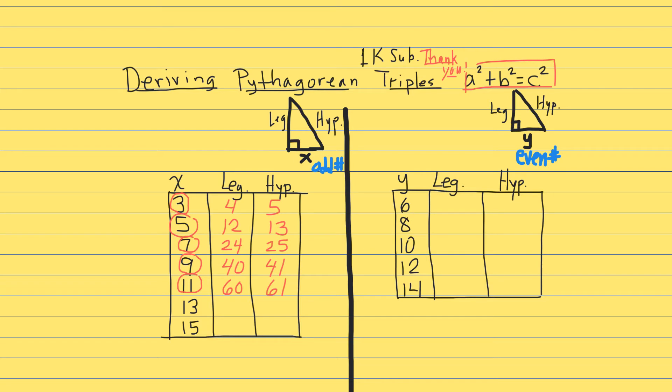So 11 squared plus 60 squared is equal to 61 squared. Let's try the next one: 13 squared. 13 squared is 169. Minus 1 is 168, and if we divide that by 2 we get 84.